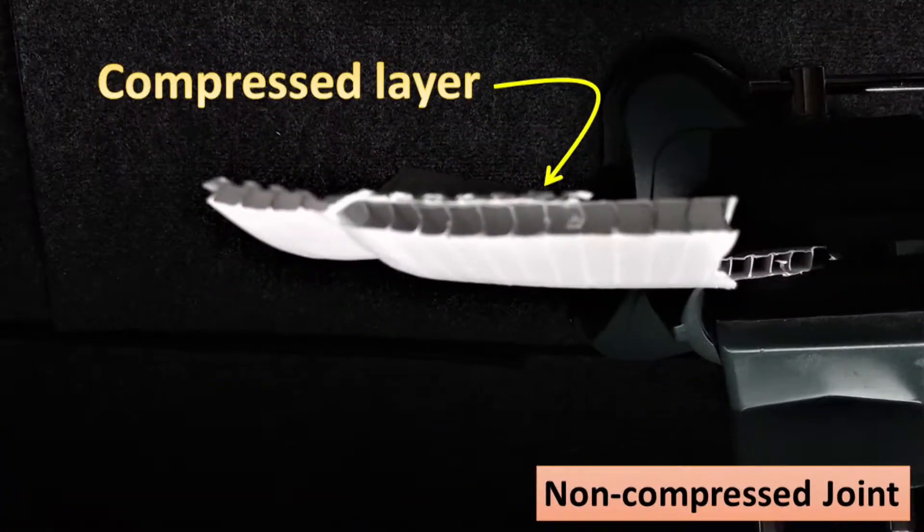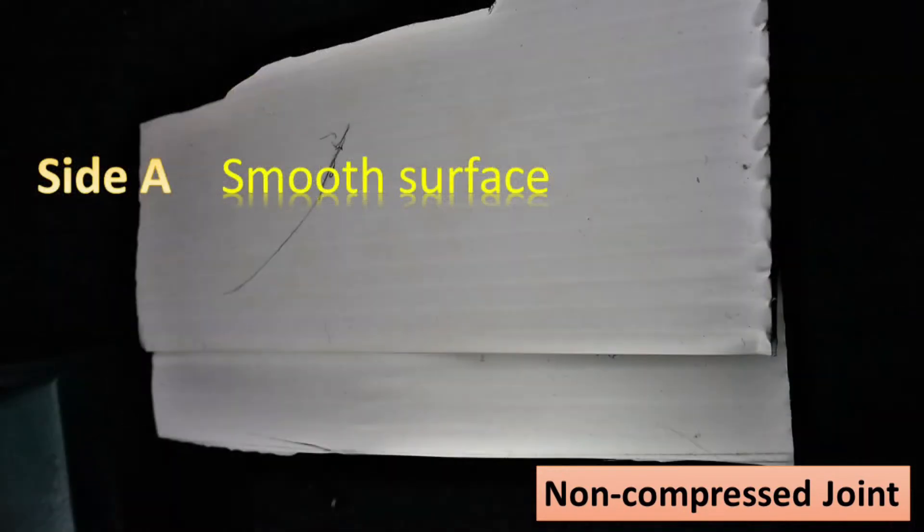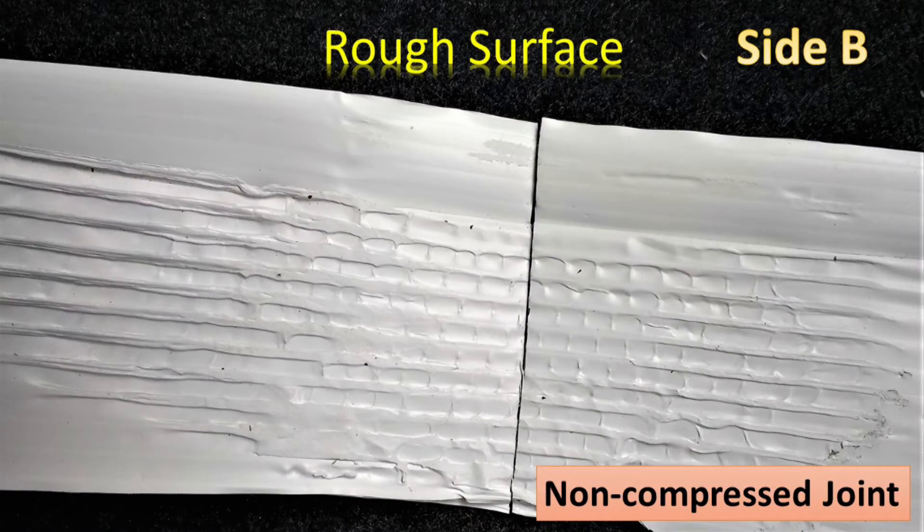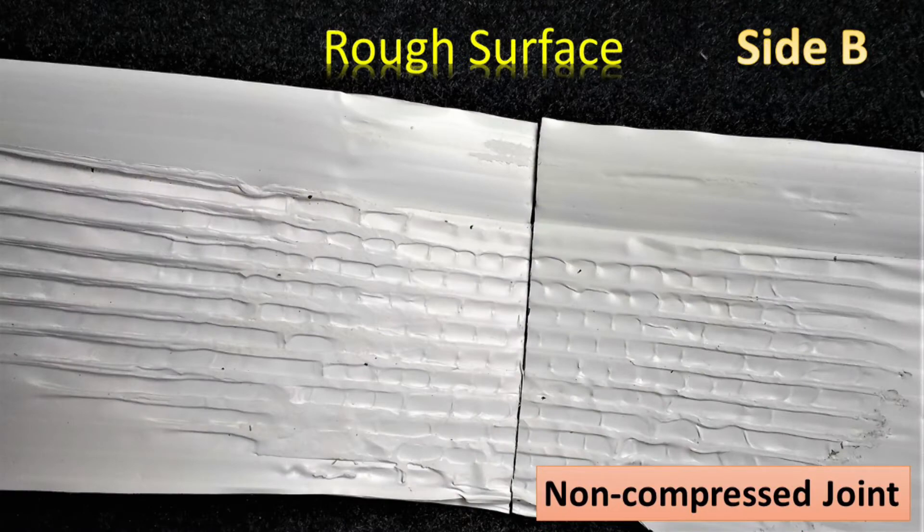With non-compressed joint, I will keep one surface of the fused Coroplast stay intact and smooth. The other side is fused as being shown here.